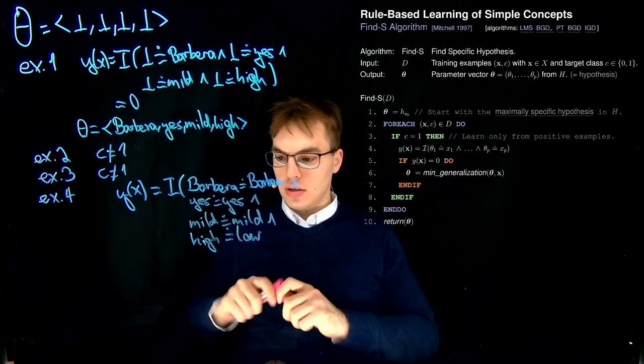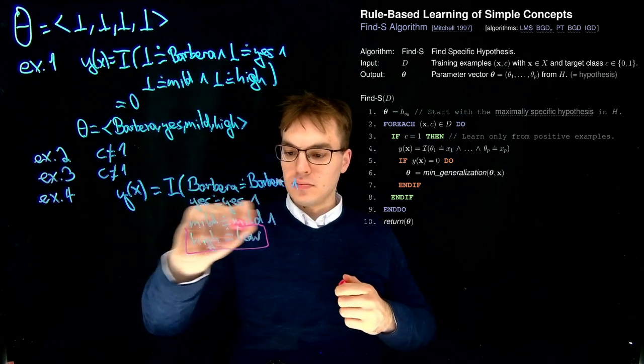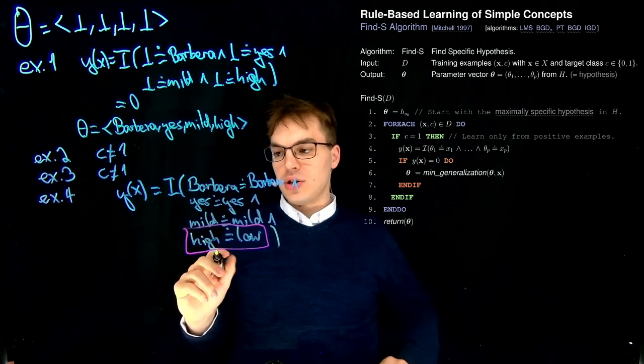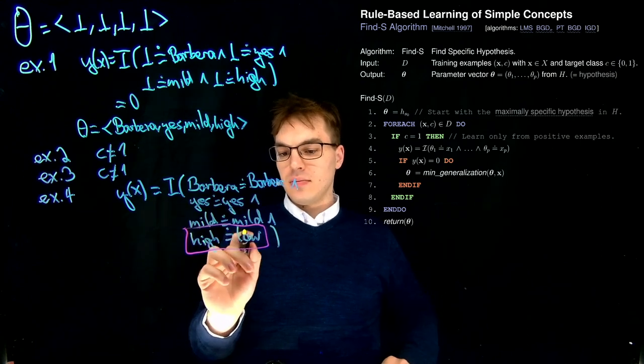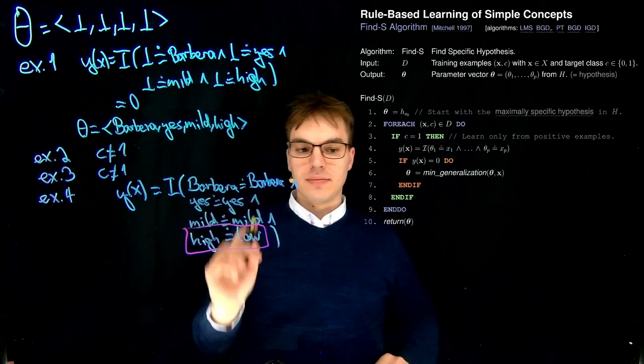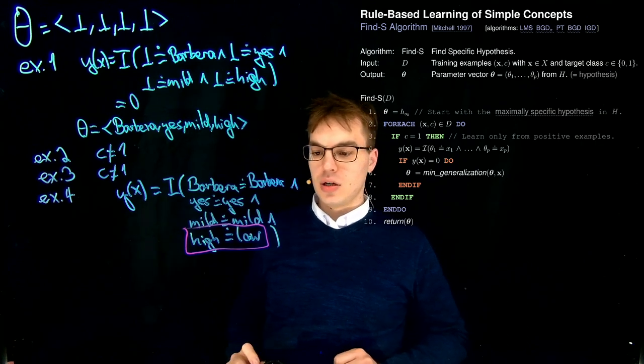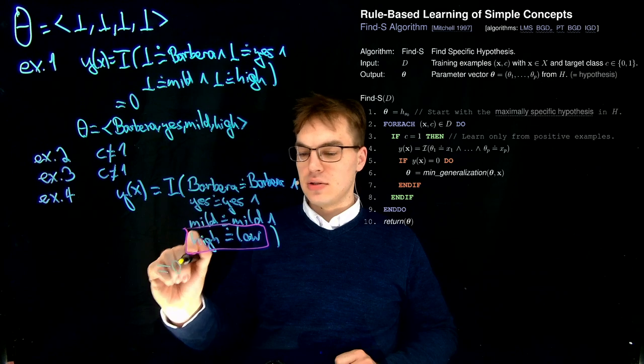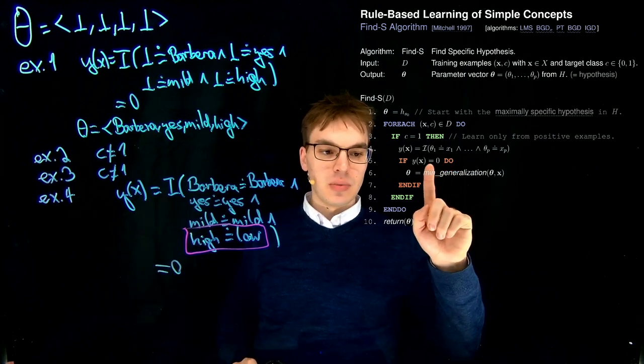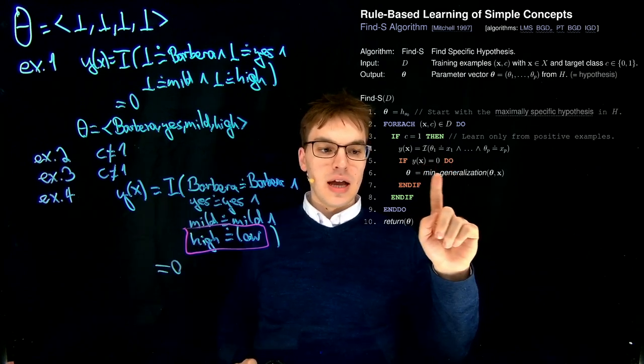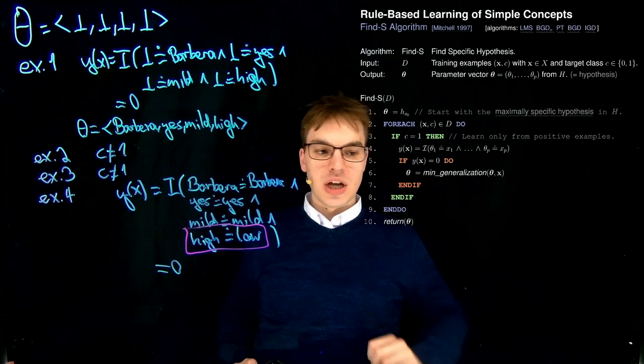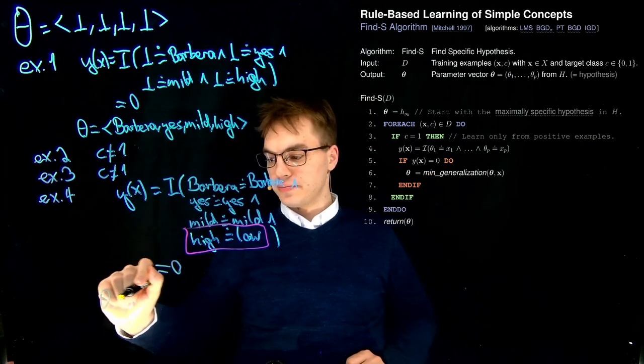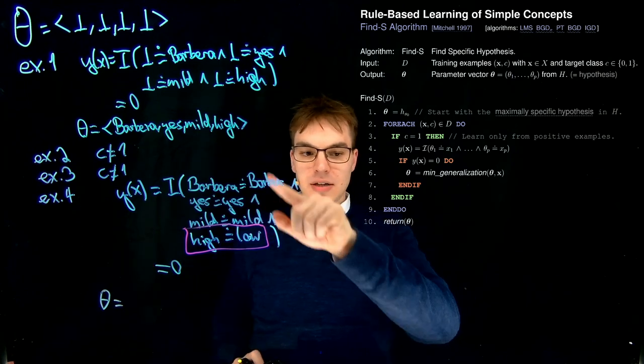But now we come to a dimension in which those values don't match, which is over here. This is something we need to address, and I'll formally show you why. You can see we have conjunctions over here, which means that this whole expression evaluates to zero again. So we have to jump into this clause over here, and again find a minimal generalization of our theta, and get a new theta.